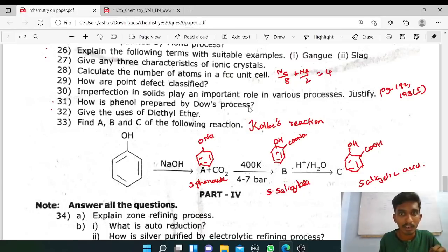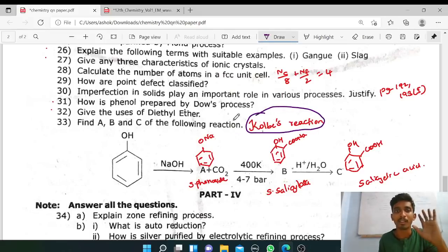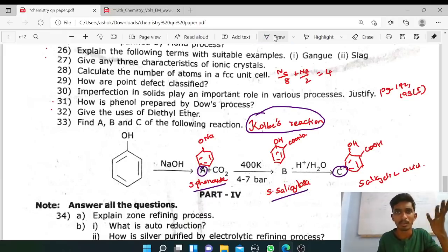If you choose this question, this is very easy. So phenol preparation. In the phenol, sodium phenoxide, that is A. B is sodium salicylate. C is salicylic acid. So Kolbe's reaction is like this.